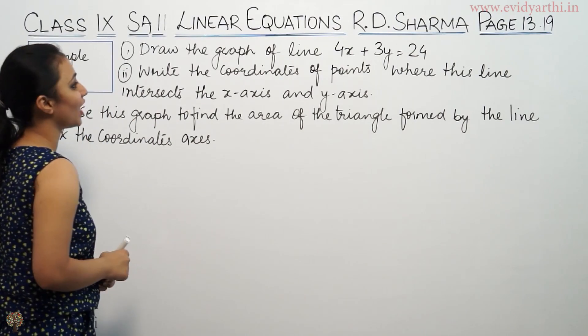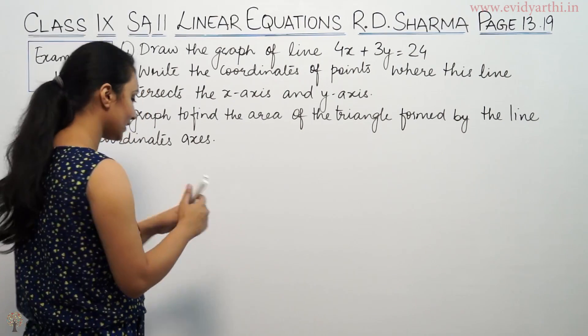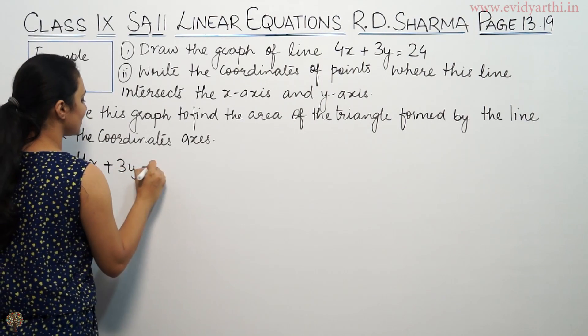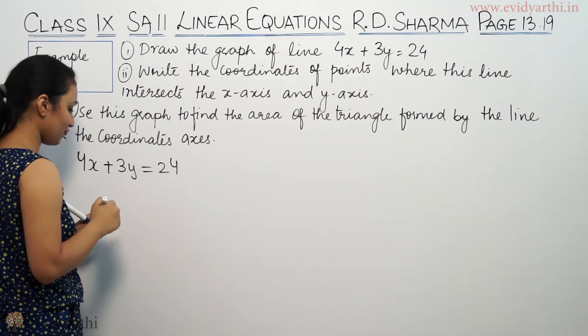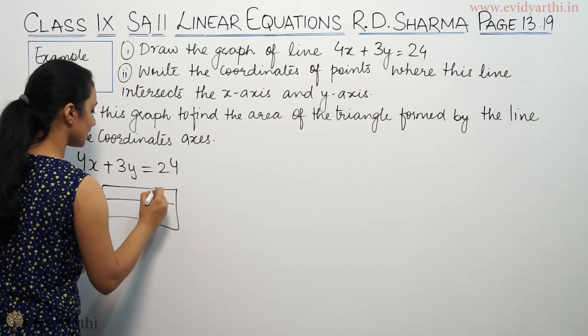This says draw the graph of the line 4x plus 3y equals 24. This is a graph plot. We will make a box first and write solutions.